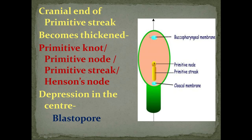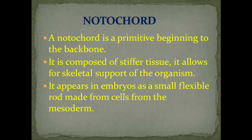Cranially is the buccopharyngeal membrane and caudally is the cloacal membrane. There is a primitive streak whose cranial end is thickened, forming a node known as the primitive node — also called primitive knot or Hensen's node. There is a depression in the center known as the blastopore.